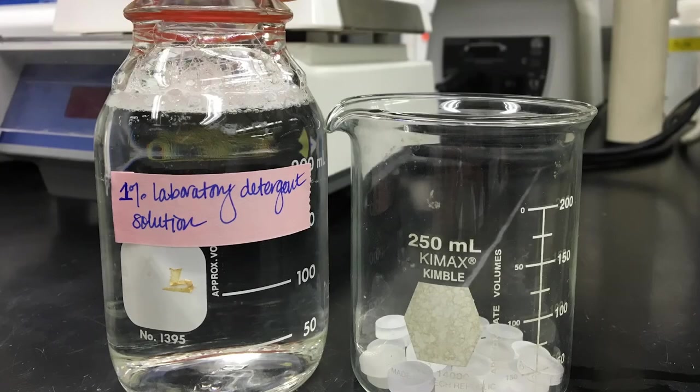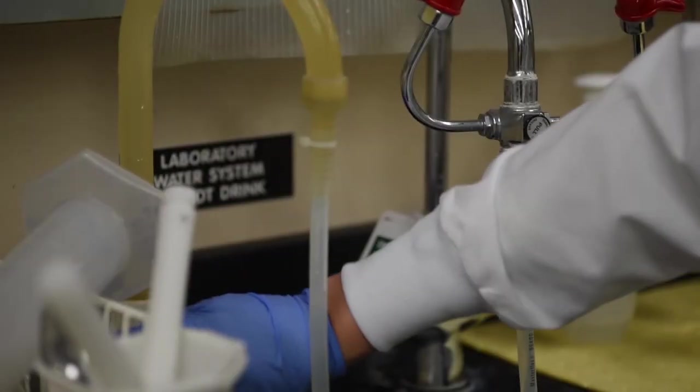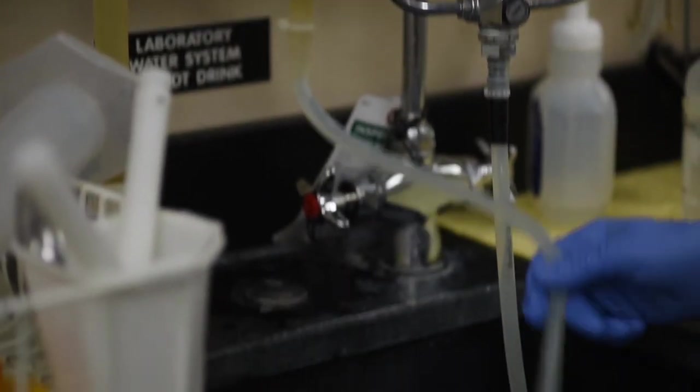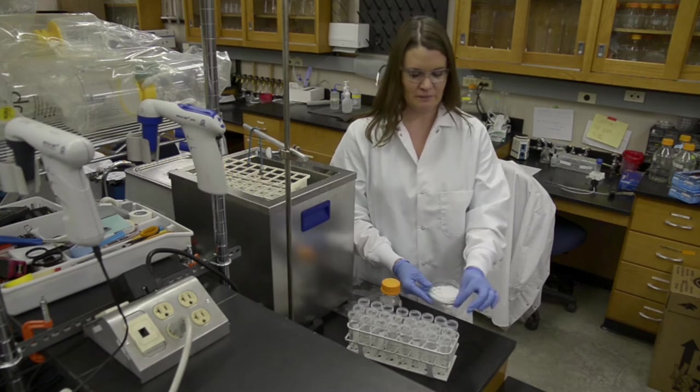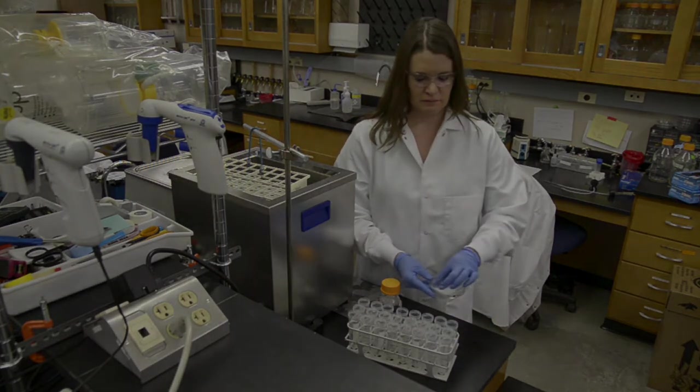For other coupon materials, polycarbonate for example, place all coupons in a beaker with 1% laboratory detergent solution. Sonicate, rinse and dry as described earlier. Handle clean coupons with gloved hands to prevent oils and other residues from soiling the surfaces.